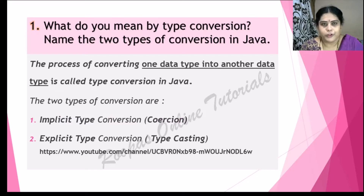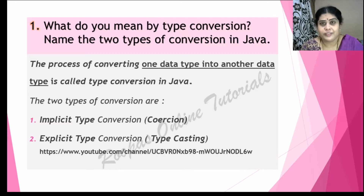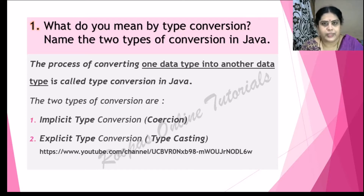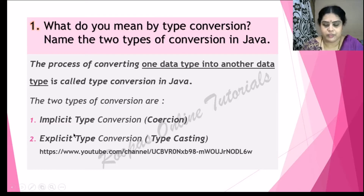The first question which has been frequently repeated in your exam is: what do you mean by type conversion? The process of converting one data type into another data type is known as type conversion — write this one line and you get one mark. Name the two types of conversion in Java: one is called implicit type conversion or coercion, and the other is explicit type conversion or type casting. If you find the spelling 'coercion' difficult, just write implicit type conversion and explicit type conversion.